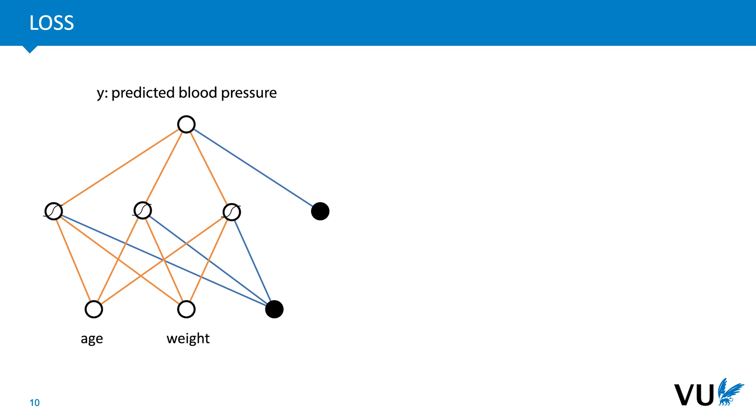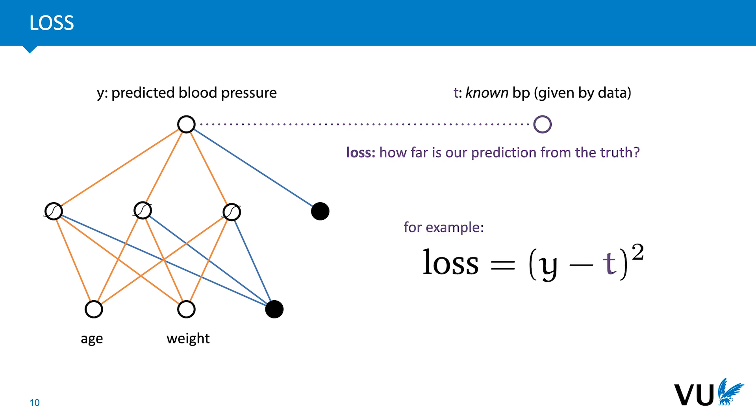The next step is to figure out a loss function. This tells you how well your network is doing with its current weights. The lower the loss, the better you are doing. Here's what that looks like for a simple regression problem. We feed the network someone's age and weight, and we ask it to predict their blood pressure. We then compare the predicted blood pressure to the true blood pressure, which we assume is given by the data. And the loss should then be a value that is high if the prediction is very wrong, and that gets lower as the prediction gets closer to the truth.